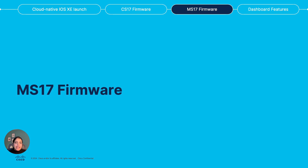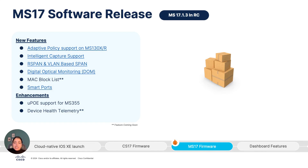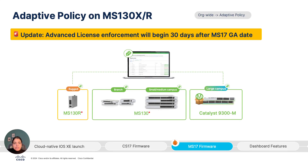We now move on to a quick look at MS firmware updates. MS17 is now in RC. Here is a list of all the features and improvements coming as part of MS17. For details on each feature, check out the spring update video shared previously. One important update: adaptive policy support was extended to MS130X and R models as part of MS17 and is currently in early access. This feature will remain in early access until 30 days after MS17 goes GA, at which point an advanced license will be required to use it on the MS130 platforms. Make sure you have up-to-date licensing if this is a feature you want to continue to use.